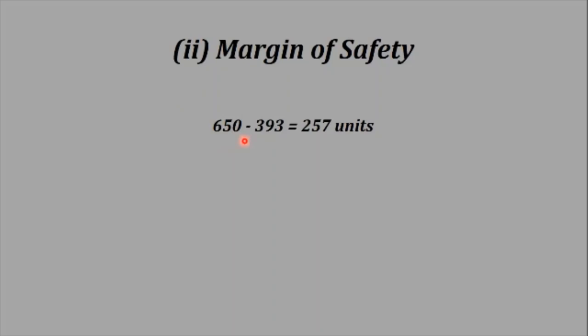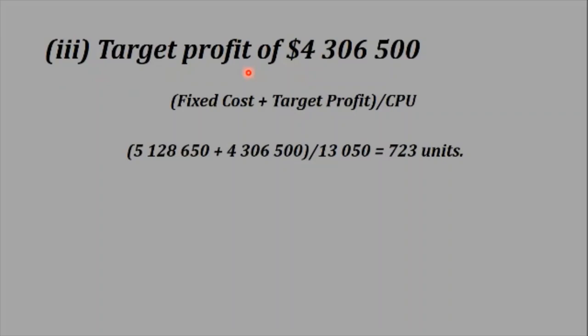Next we have the margin of safety. This is the budgeted production of 650 minus the breakeven point we just calculated, giving us 257 units. This is in units; if you want to get it in sales you just multiply the 257 by the selling price. We have to be careful here that we take the budgeted production and not the actual production. For the target profit of 4,306,500, we use a modified version of the breakeven formula — we add the target profit to the fixed cost and divide by the CPU. In this case: 5,128,650 plus 4,306,500 divided by the contribution per unit, giving us 723 units.